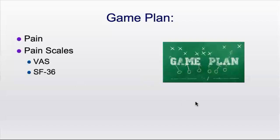Today we're going to discuss all things pain. We'll look at some classification systems, neurological processing, referred pain, and chronic versus acute pain in more depth, including the gate control theory of pain — which you've likely encountered in previous physiology classes. Once we're done talking about pain, we'll discuss a couple of different outcome measures: specifically the visual analog scale, or VAS, and the SF-36, also known as the short form 36, and the short form 16.